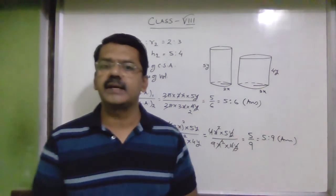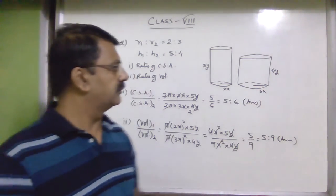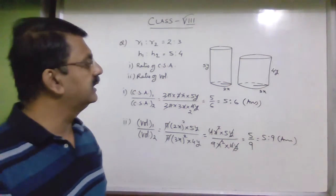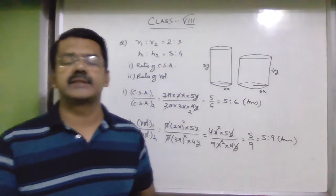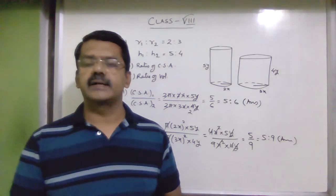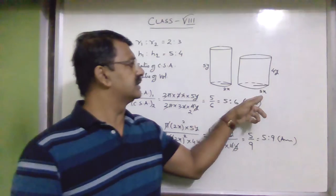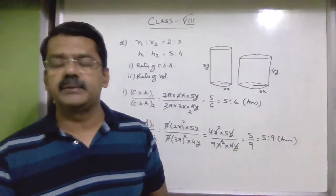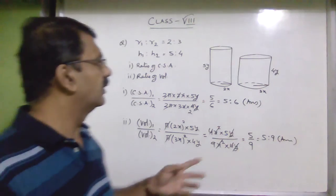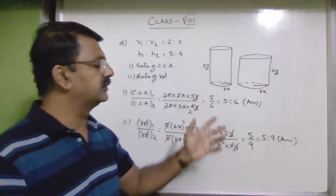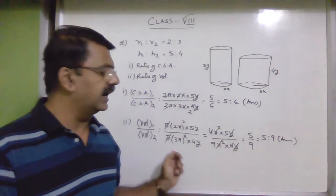Note: if they asked for the ratio of their total surface areas, we cannot find it with just the ratios. To find the ratio of total surface area — formula 2πr(h + r) — we would need to add h and r, giving (2x + 5y) and (3x + 4y) for each cylinder, which cannot be simplified without actual values. So we need the actual radius and height, not just their ratios, to find the total surface area ratio.